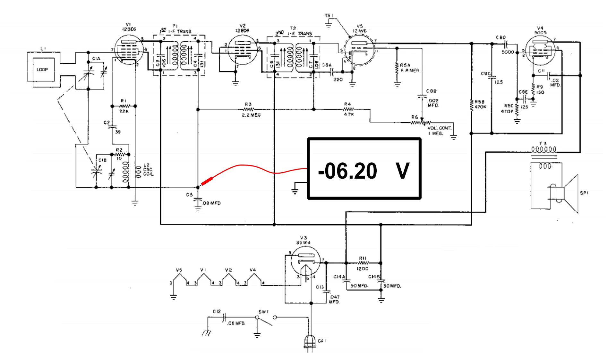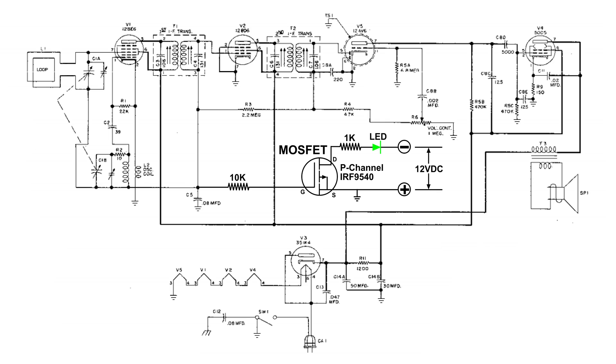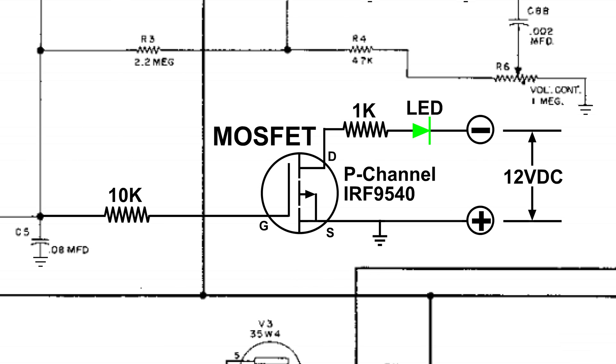Here's an idea that I came up with using a P-channel MOSFET. I've got a 10K ohm resistor that goes to the gate of that MOSFET. Notice that the source is grounded to the chassis and I have a separate 12 volt supply. Notice that the positive also goes to the source and the chassis of the radio. Then at the drain we've got a 1K ohm resistor going through an LED to the negative supply of that 12 volt supply.